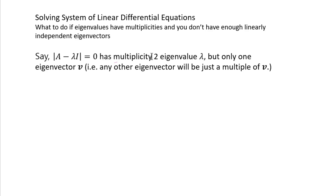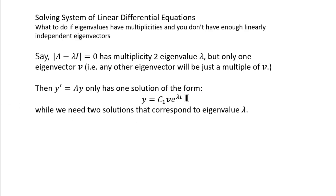Let's say lambda is a multiplicity 2 eigenvalue, but there is only one eigenvector v — in other words, other eigenvectors are just multiples of v. If you still find two linearly independent eigenvectors for this eigenvalue lambda, then there is nothing to worry about; you can solve it just like before. However, if you don't find enough linearly independent eigenvectors, you're in trouble because you can only write down one solution: e to the eigenvalue times t, times the eigenvector. Because this is multiplicity 2, you need two linearly independent solutions from this one eigenvalue lambda.